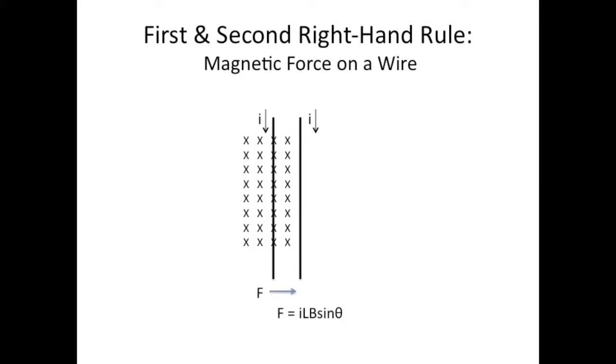Then you just do everything again only vice versa. This would mean that the right wire experiences a force to the left. So both these wires experience forces towards each other meaning they attract. They both exert forces on each other that make them move towards each other and this is always the case for wires with parallel currents.